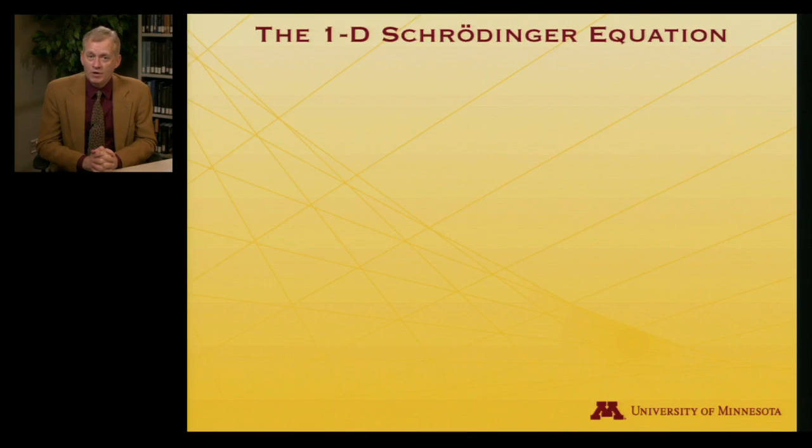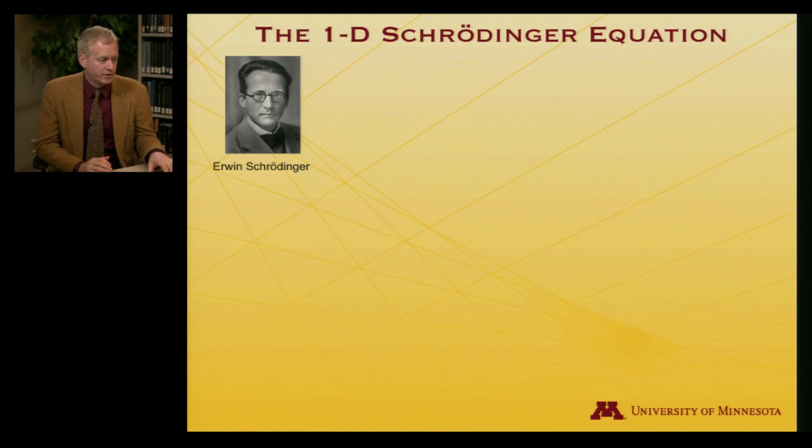All right, I want to wrap up now by explaining how do we get these quantized energy levels. How can we use quantum mechanics to predict allowed energies for systems? And the answer to that is the Schrödinger equation. So here's Erwin Schrödinger, and he was a German physicist who first explored how to take wave mechanics and use it to describe the properties of energy and matter.